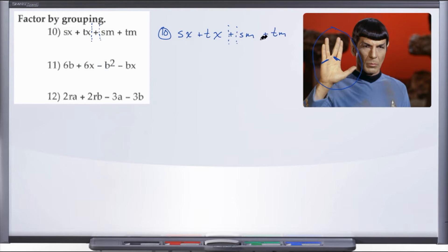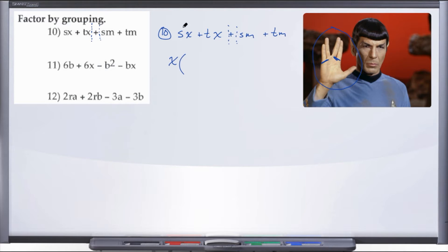Now that we have a left and right side, we're going to treat the left side like its own separate problem and the right side like its own separate problem. What is the GCF of the left-hand side? Well, x is probably going to be our GCF here, because we have an x in both terms. So we take out an x. x times what gives me Sx? Well, x times S. And x times what gives me Tx? x times T.